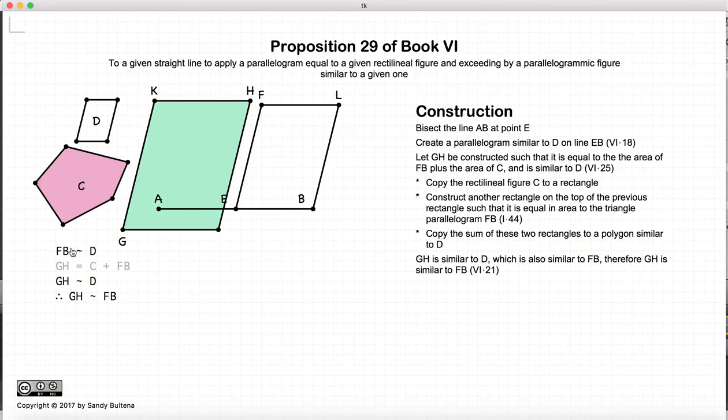Now FB is similar to D. GH is similar to D. So therefore GH is similar to FB. No surprise.